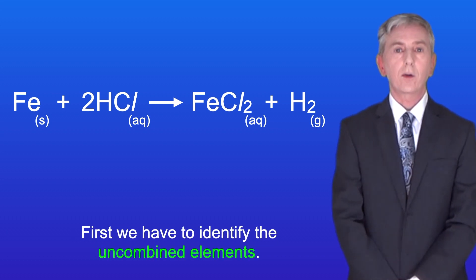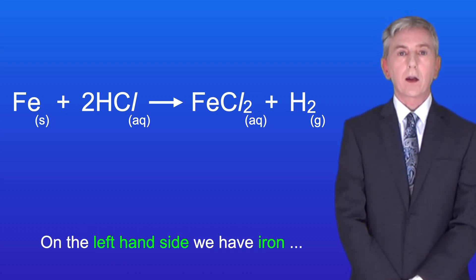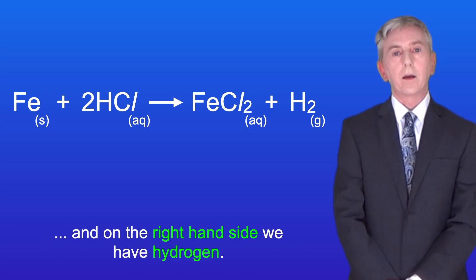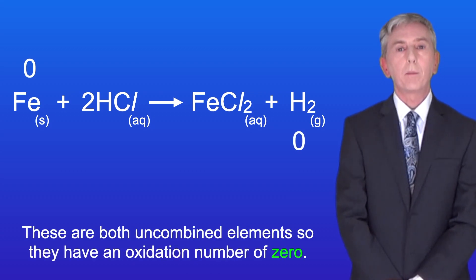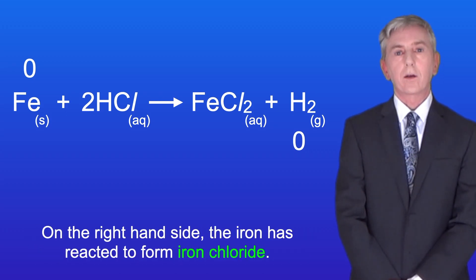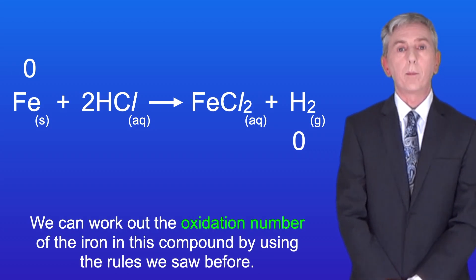First we have to identify the uncombined elements. On the left hand side we have iron and on the right hand side we have hydrogen. These are both uncombined elements so they have an oxidation number of zero. On the right hand side the iron has reacted to form iron chloride. We can work out the oxidation number of the iron in this compound by using the rules we saw before.